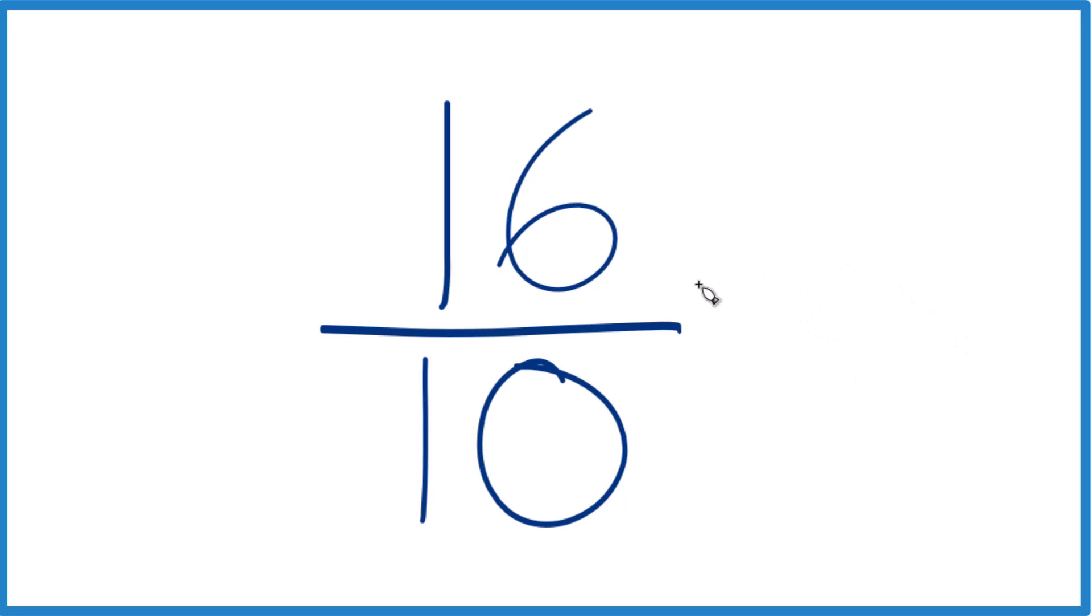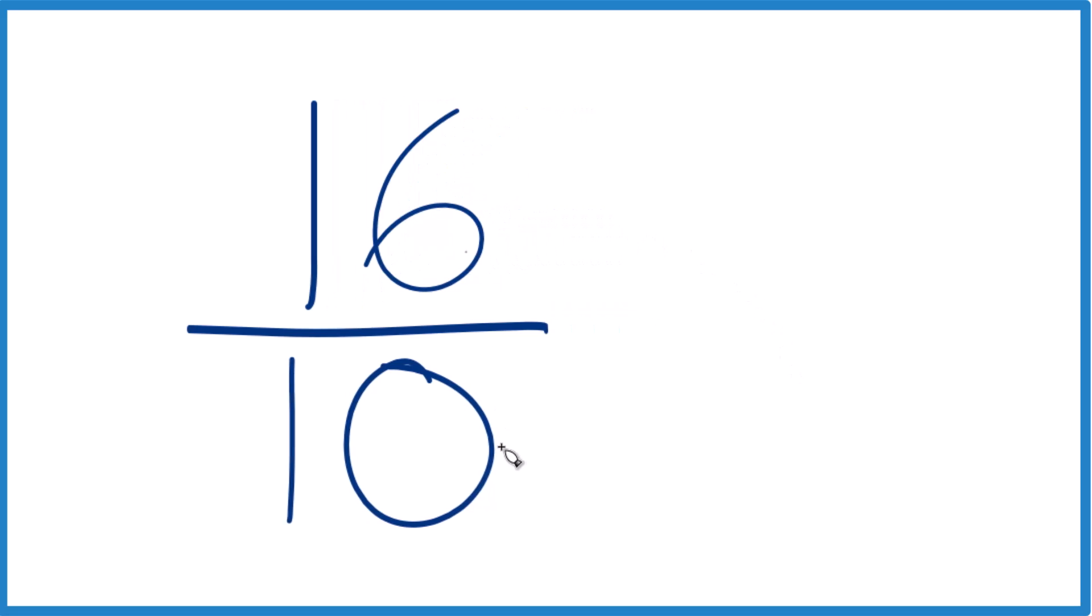So we're looking for a factor that goes into 16 and 10 evenly, a whole number. Call it a common factor. So it looks like the only thing that's going to go into both 16 and 10 is 2.